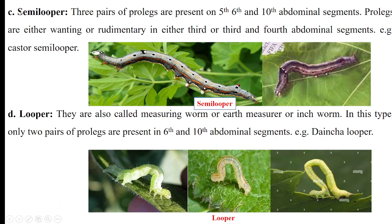Then the third type is the semilooper. They have 6 pairs of total legs — 3 pairs that are present on the thorax, and 3 on the abdomen. The abdominal pseudo-legs are present on the 5th, 6th, and 10th abdominal segments. You might have seen them making a small loop — hence they are called semilooper. For example, castor semilooper.